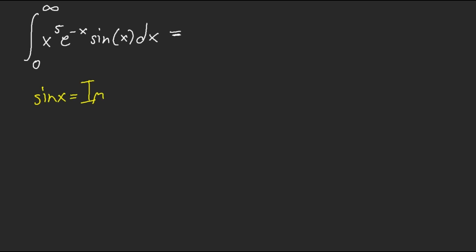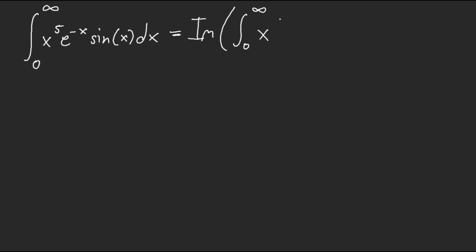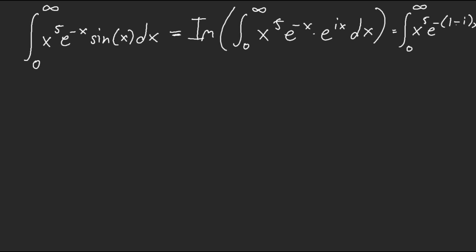When we complexify, we use the fact that sine of x is the imaginary part of e^(ix). So inside the integral we write the imaginary part of x⁵ · e^(-x) · e^(ix) dx, which becomes the imaginary part of the integral from 0 to ∞ of x⁵ · e^(-(1-i)x) dx. Now I let u = (1-i)x, giving du = (1-i)dx.